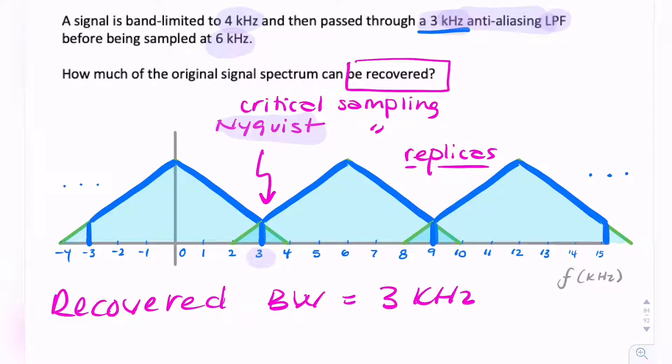Because we could apply a low-pass filter at the receiver. We could apply an ideal low-pass filter at the receiver that would recover our original message, or at least 3 kHz of our original message. So this could all be recovered.